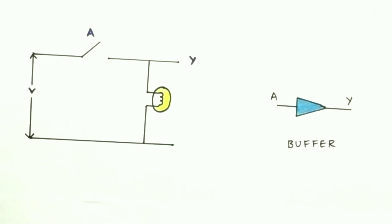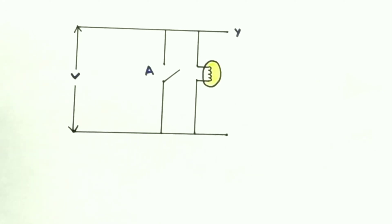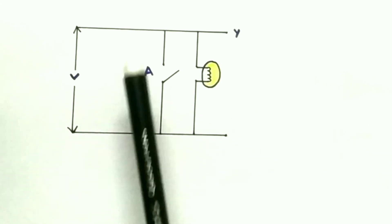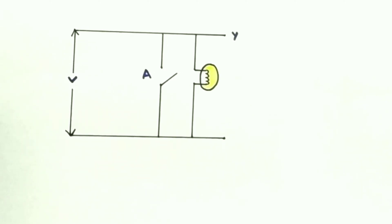Now let us take another network and decide its behavior. The switch is connected in a different fashion — before it was here, now it is connected over here. Let's see what happens when the switch is closed and open. When the switch is open, the bulb will glow because the current will flow.